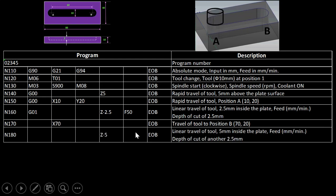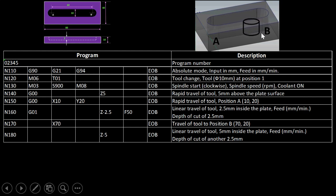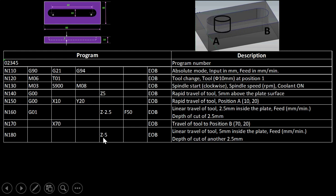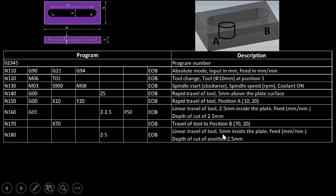At point B, the cutter must go deeper by another 2.5 mm to achieve the full 5 mm slot depth. We write G01 Z-5, which commands linear travel to 5 mm inside the workpiece. This completes the second depth pass at position B.